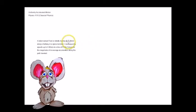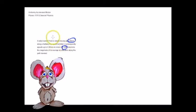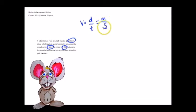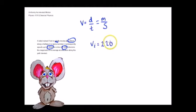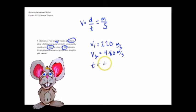A robot named Fred is initially moving at 2.2 meters per second along a hallway in a space terminal. It subsequently speeds up to 4.8 meters per second in a time of 0.20 seconds. We want to determine the magnitude of its average acceleration. So our knowns are: initial velocity vi equals 2.20 meters per second, final velocity vf equals 4.80 meters per second, and time t equals 0.20 seconds.